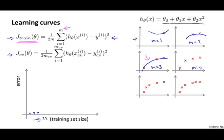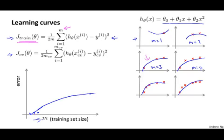If I have m equals four examples, the quadratic function can no longer fit this data set perfectly. And if I have m equals five, maybe a quadratic function can fit this data so-so. But as my training set gets larger, it becomes harder and harder to ensure that I can find a quadratic function that passes through all my examples perfectly. So as the training set size grows, the average training error actually increases. The intuition is that when m is small you have very few training examples, it's pretty easy to fit every single one perfectly. Whereas when m is larger, it gets somewhat harder, and your training set error becomes a little bit larger.